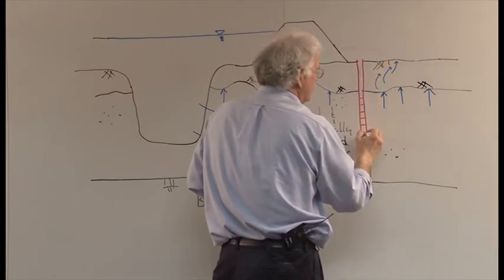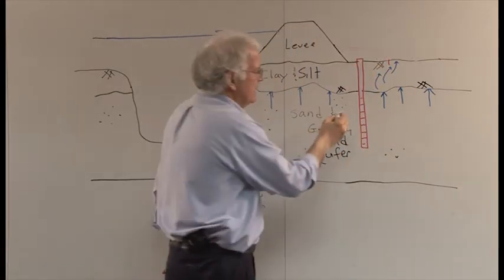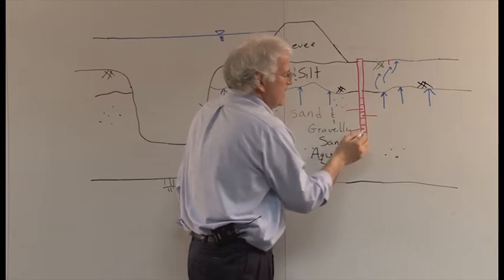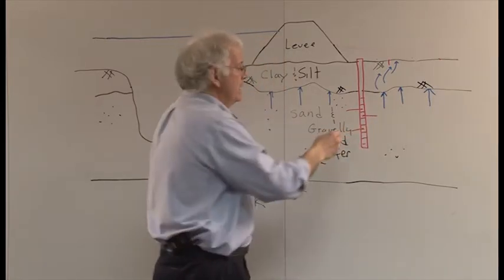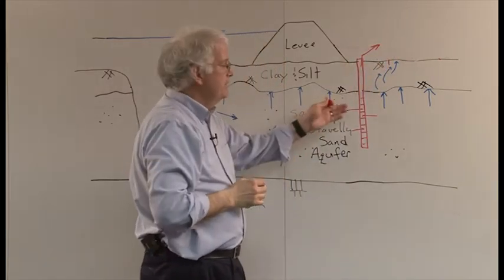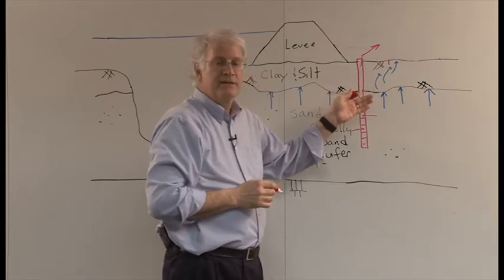that's drilled into the ground, and the slots in the pipe allow groundwater under pressure to flow into that pipe, into the interior of the pipe, and then that water will flow out the top of the well, and in doing so, that reduces the pressure acting at the base of the blanket.